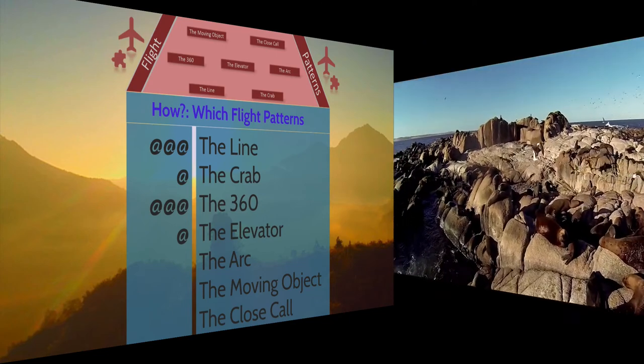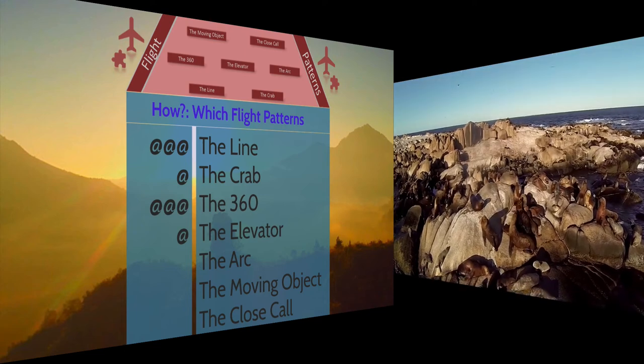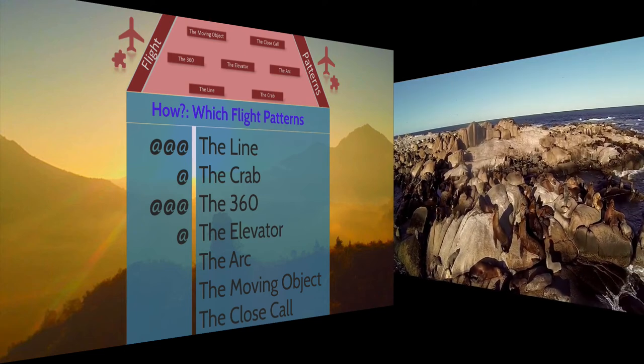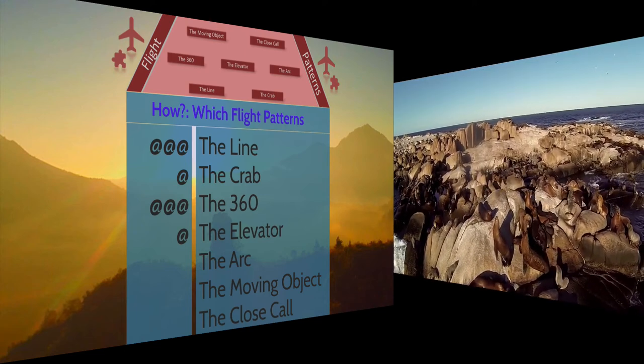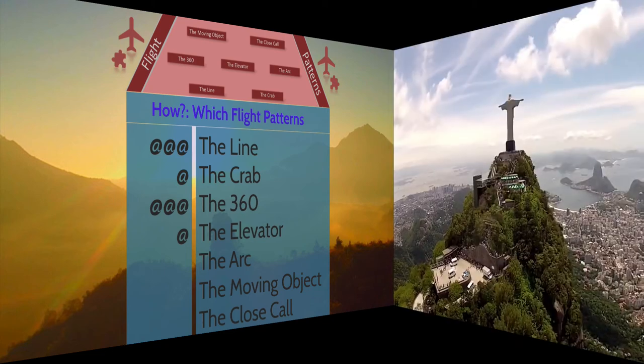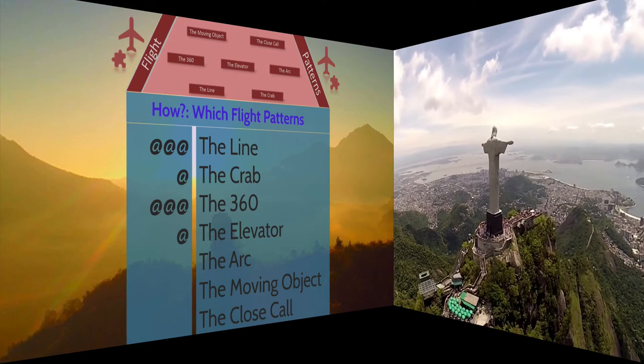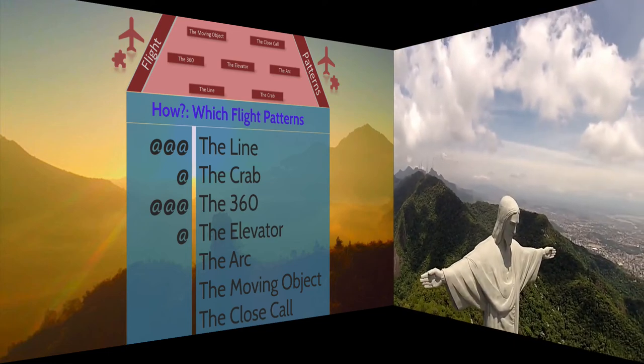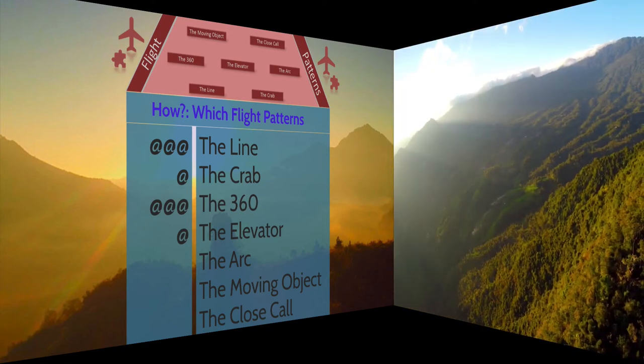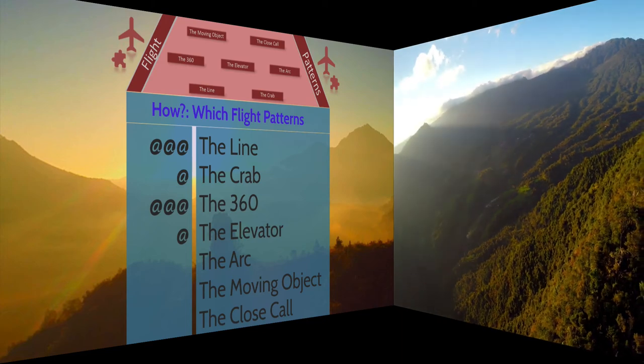You can also get these from things such as the crab where you're going along sideways. You're a bit closer to stuff here, so it's not quite a strong source of the beauty shot. Similarly as well for the elevator. When you're flying straight up in the air, you're getting in lots of wide-angle details, so that can be quite good for the beauty shot. But the line and the 360 are the ones that you're really going for.